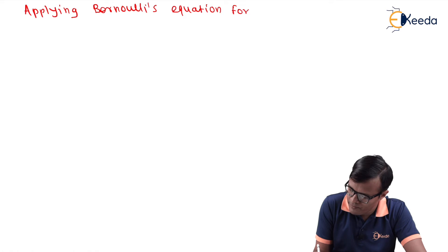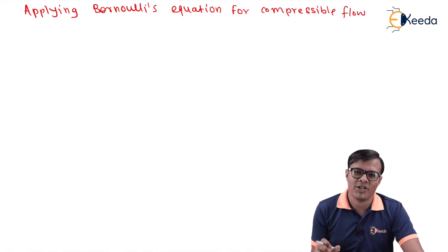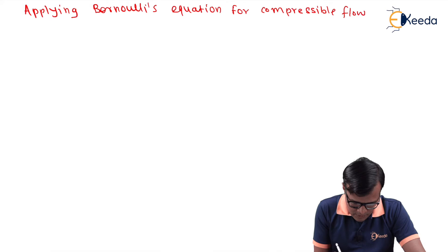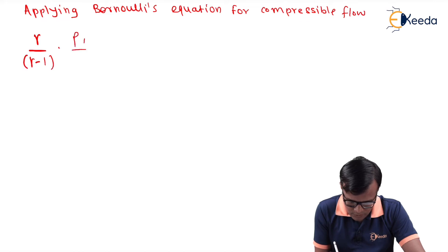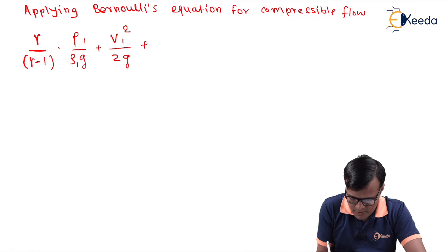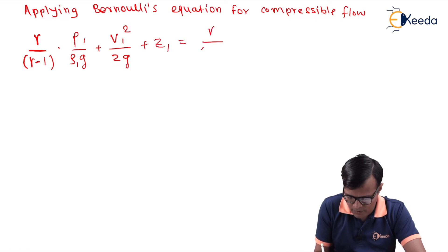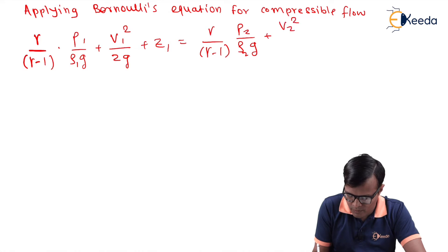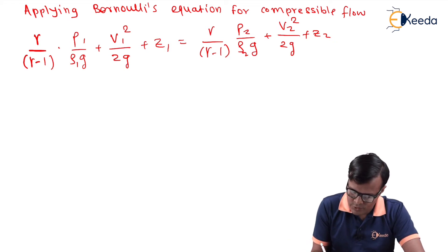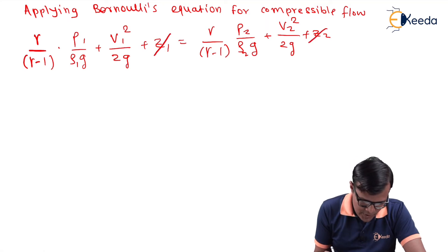Applying Bernoulli's equation for compressible flows — there is a slight difference from the incompressible form. The equation is: γ/(γ−1) · p1/(ρ1·g) + v1²/(2g) + z1 = γ/(γ−1) · p2/(ρ2·g) + v2²/(2g) + z2. Since the pipe is horizontal, z1 = z2, so those terms cancel out.